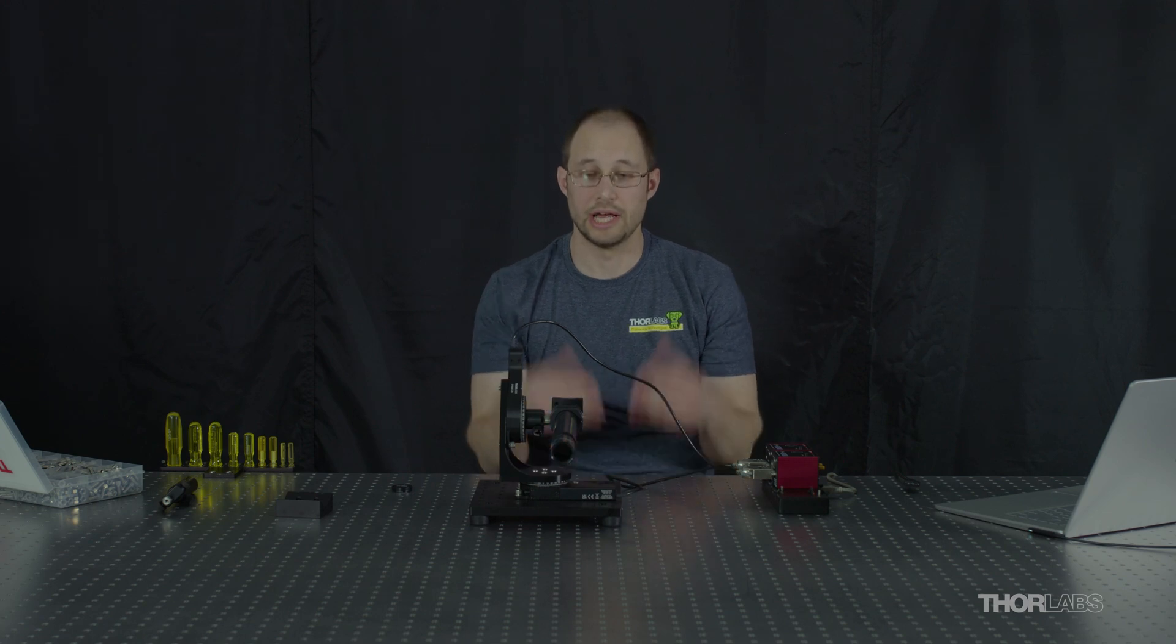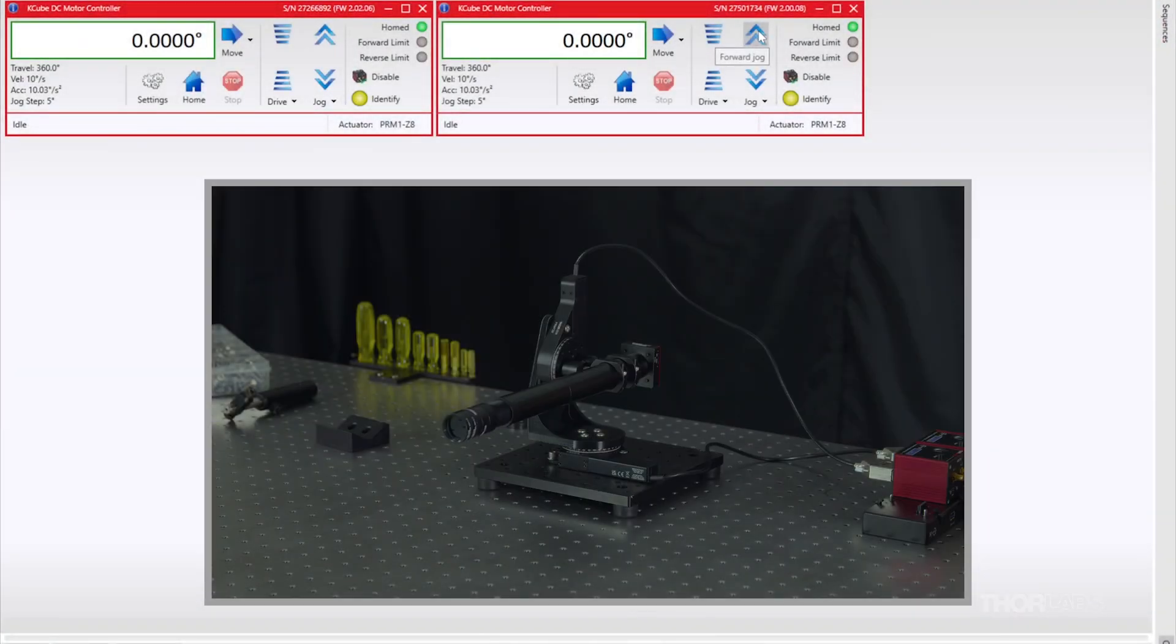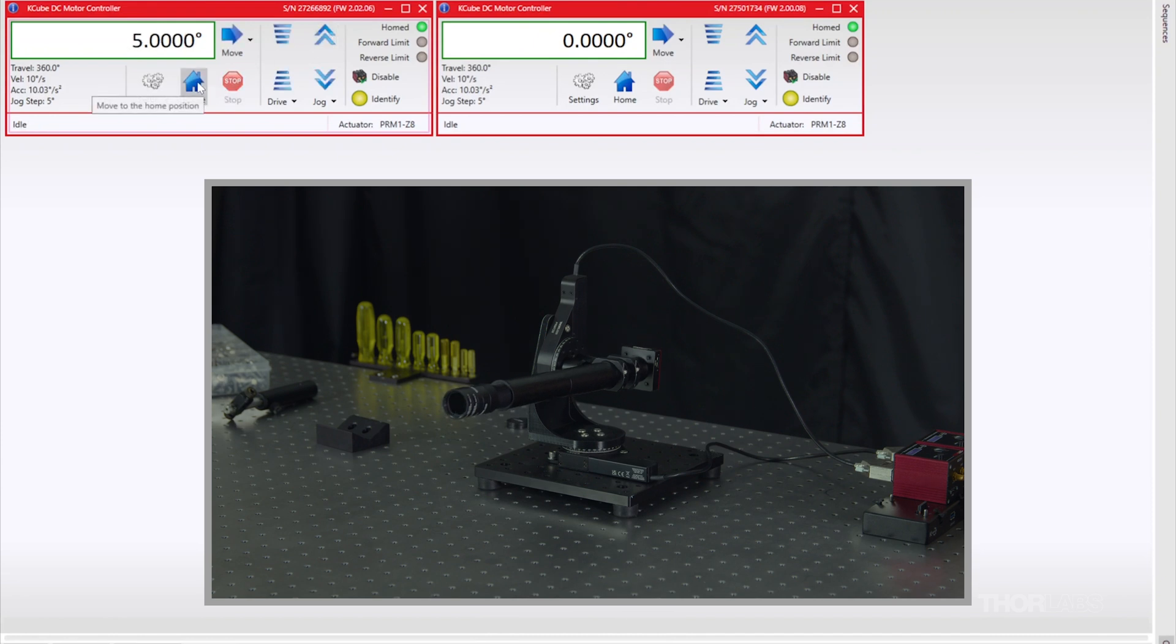With our motors added, we now have our motorized imaging solar telescope. Now we can open the software to make sure that the motors are working correctly. First, I'm going to verify that each motor is going to be moving in the correct direction. I can see moving the azimuth in a positive direction rotates it clockwise as expected. And I can see moving the elevation axis in the positive direction correctly moves it upwards.